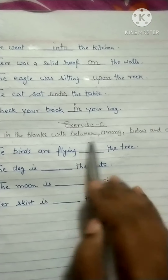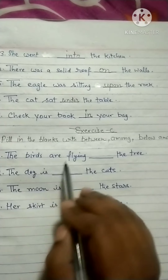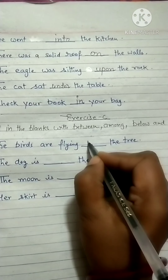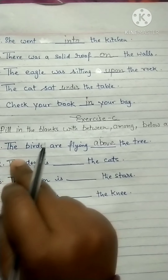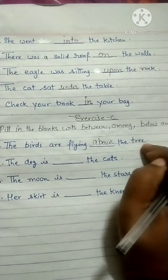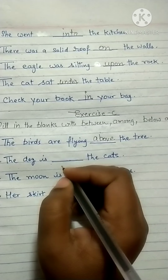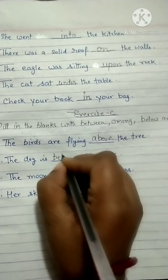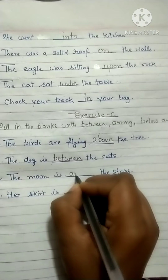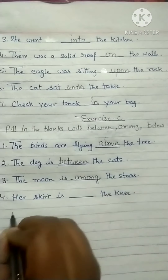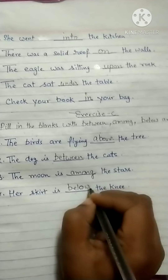Come to the last exercise, in which you have to fill in these prepositions: between, among, below, and above. 'The birds are flying above the trees' — above. 'The dog is between the cats' — between. 'The moon is among the stars' — among.